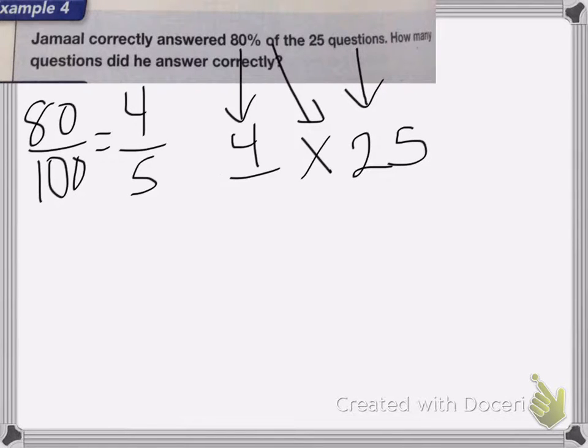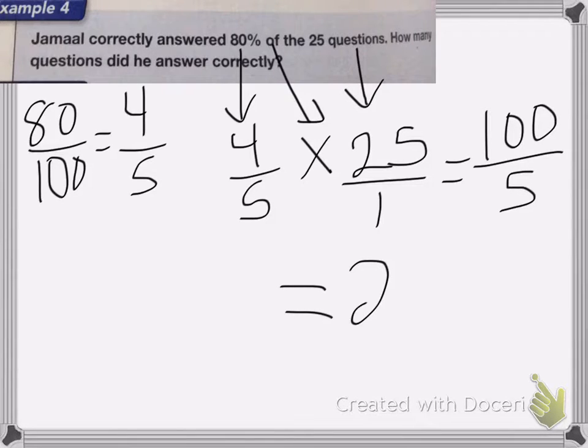So we're going to do 4 fifths times 25 over 1. 4 times 25 is 100. 5 times 1 is 5. So 100 divided by 5 is equal to 20. That is the correct answer.